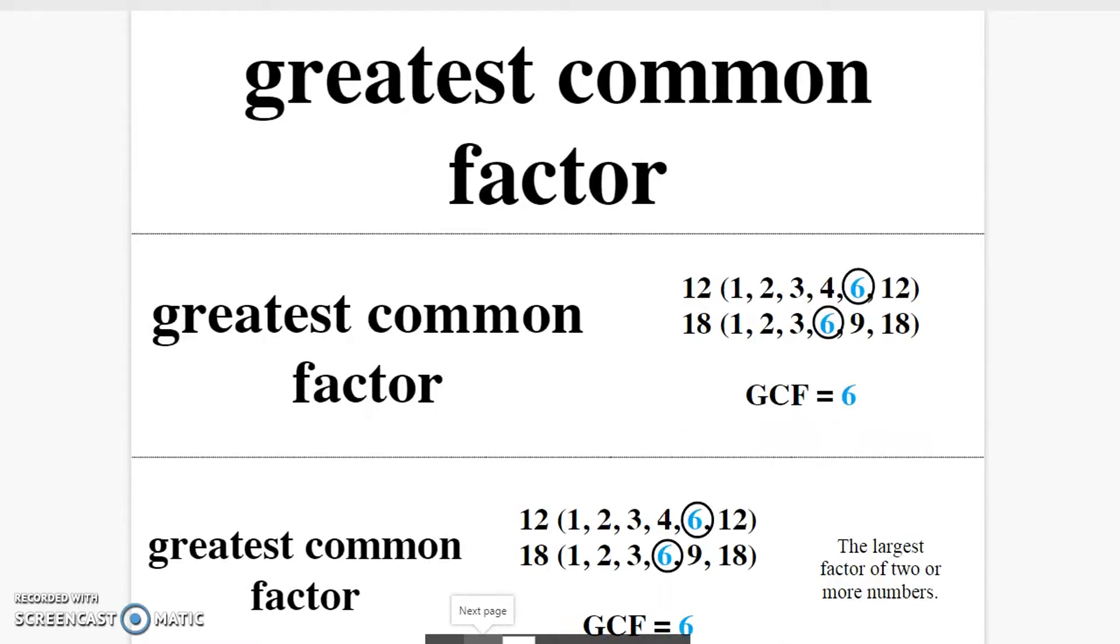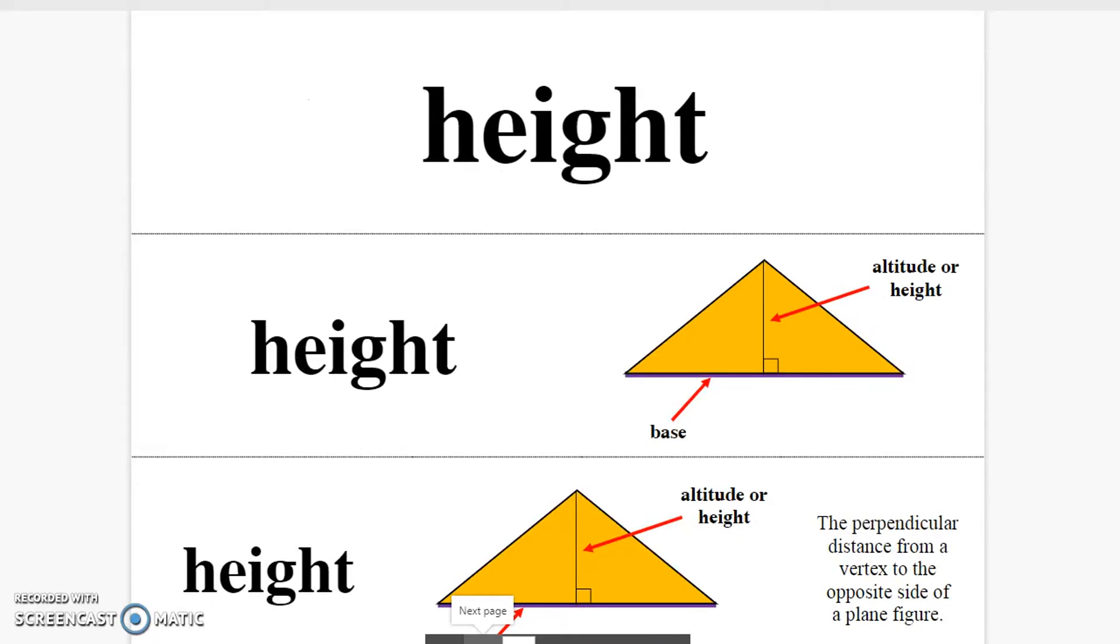Greatest common factor. The largest factor of two or more numbers. Height. The perpendicular distance from the vertex to the opposite side of a plane figure.